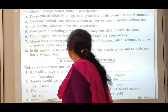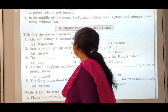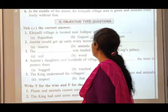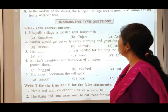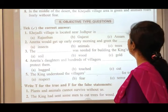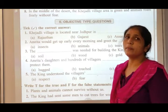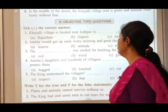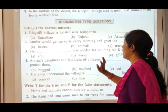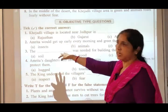Now for the objective type questions, that is MCQs, take the correct answer. The first one: Khejali village is located near Jodhpur in which state? The answer is Rajasthan — it is located in Rajasthan.